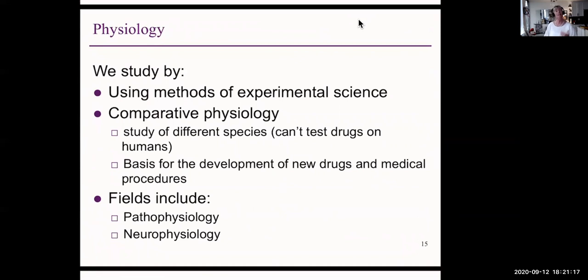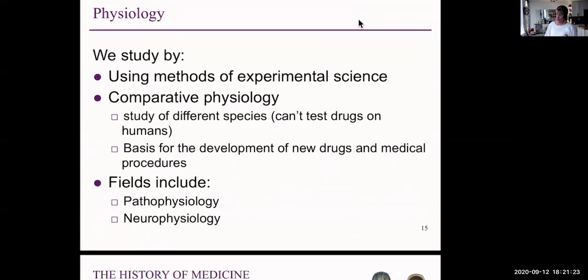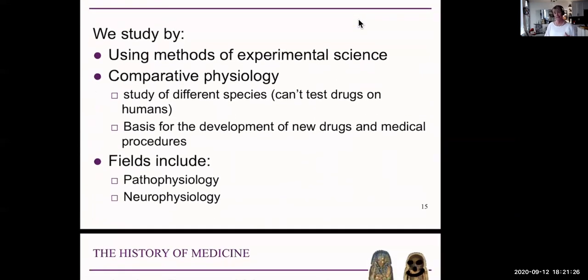We study by using methods of experimental science. It's a little bit different than just observing. Often we do comparative physiology, so studying different species. And one of the reasons is that we can't use humans to test drugs. And so that's why it takes a little bit of time for drugs to become available. And one case in point, of course, we're all waiting anxiously for a vaccine for the COVID virus at the moment, but it takes a little while because these drugs need to be tested on animals first, normally, and then human clinical trials take some time.